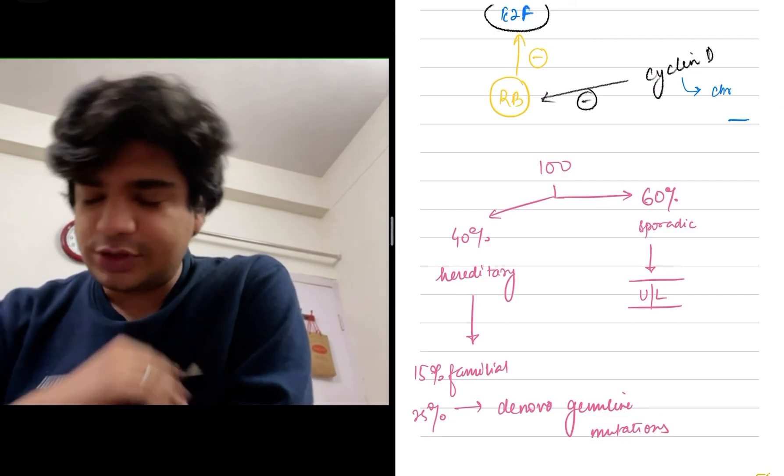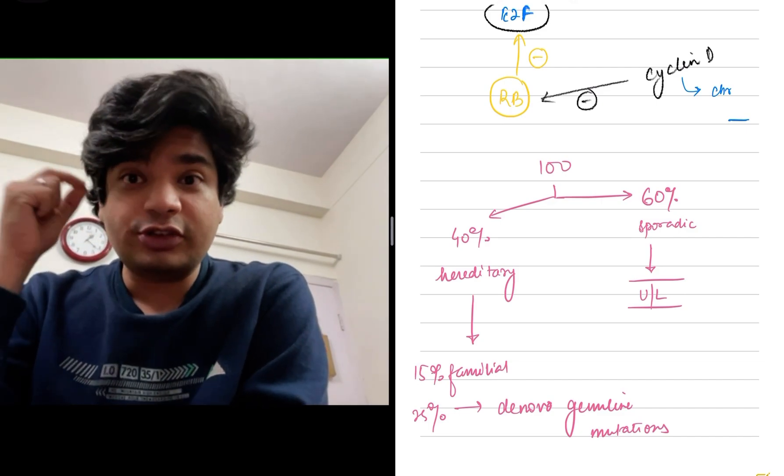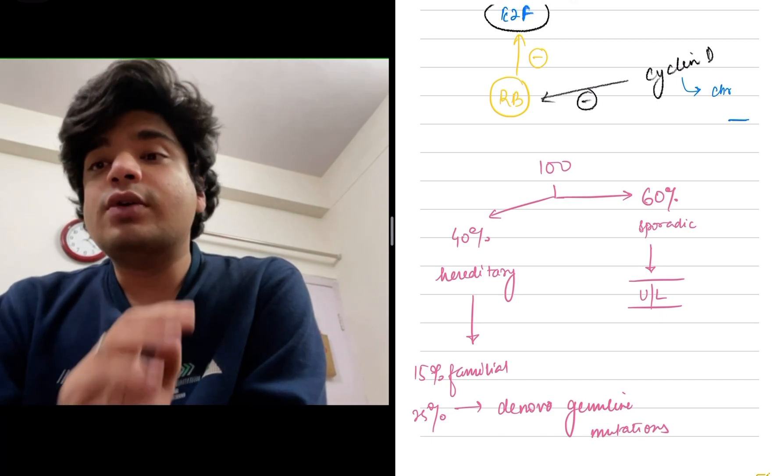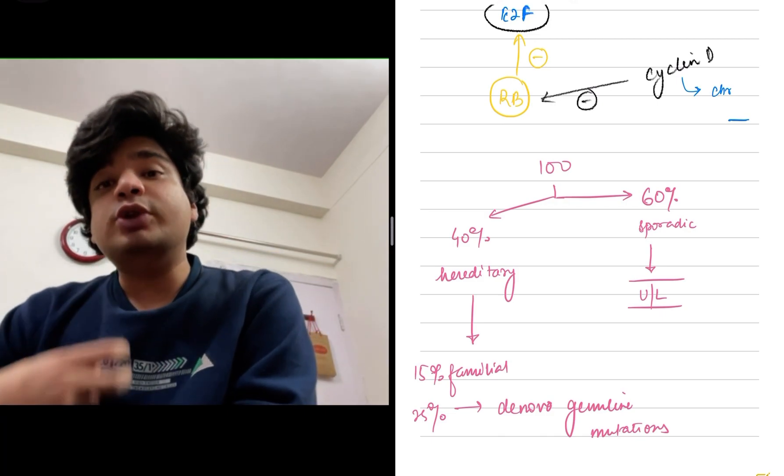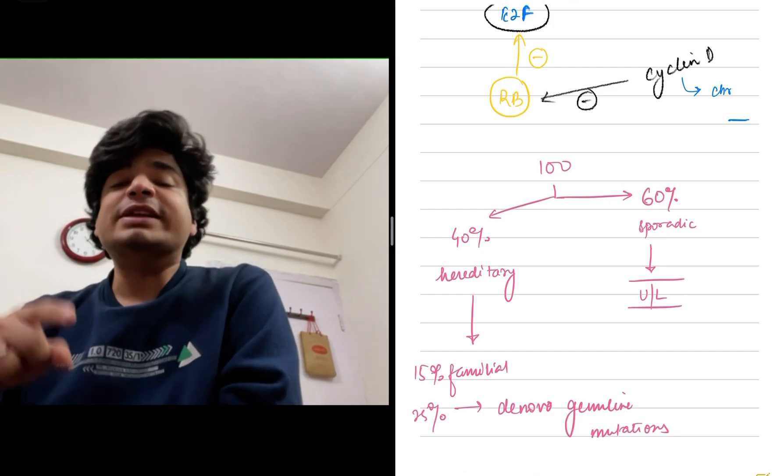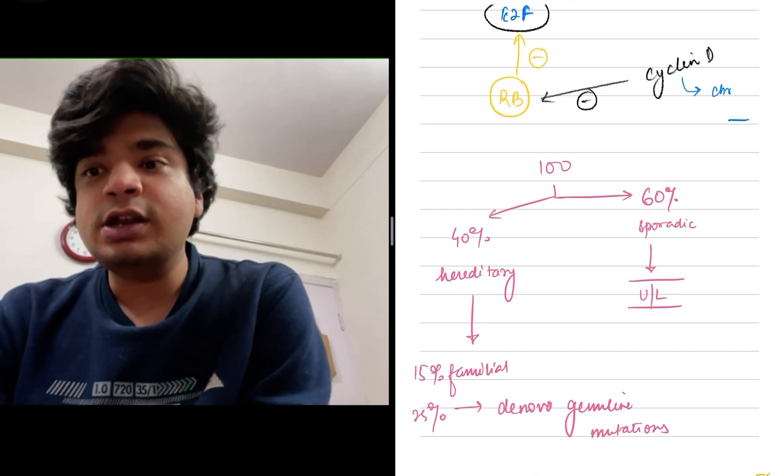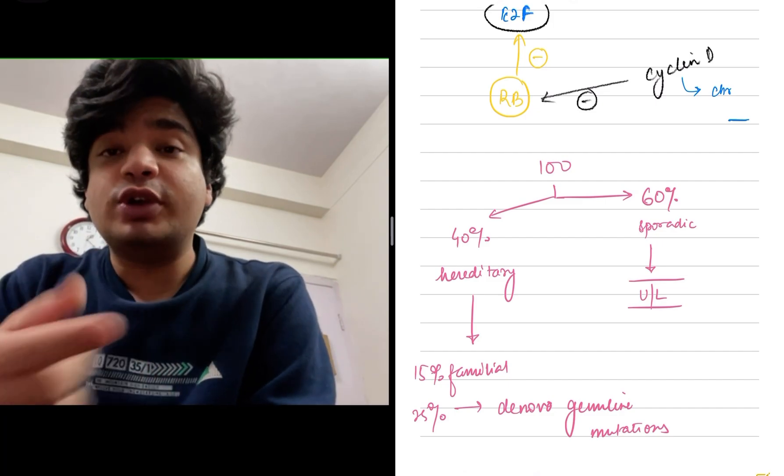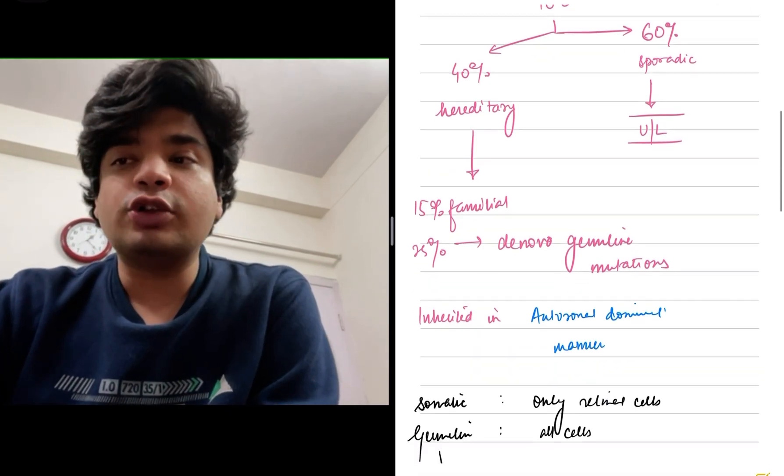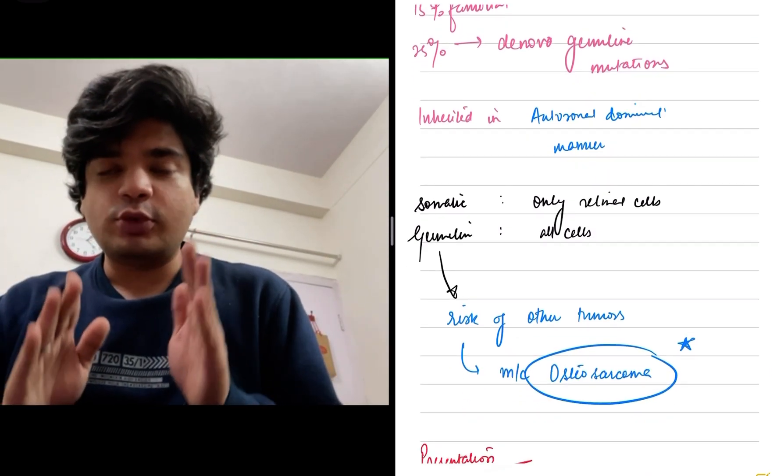Of 100 cases of retinoblastoma that we see, around 40% are hereditary and 60% are sporadic. The sporadic cases occur because of somatic mutation—not present in germline, only in the retinal cells. 40% are hereditary, meaning the mutation will be present in the germline, in the germ cells of the parents. Having said that, it does not mean the parents themselves will have the disease—only the germ cells carry this mutation. 15% cases are familial, and 25% will have de novo mutations in the germ cells.